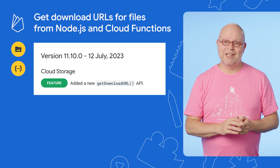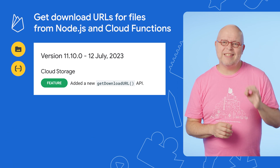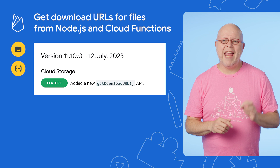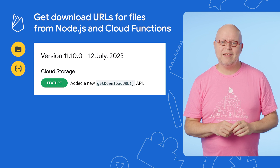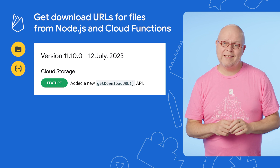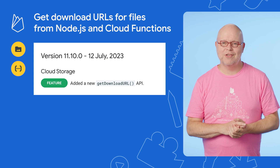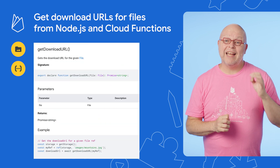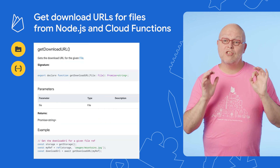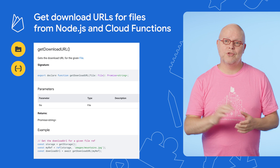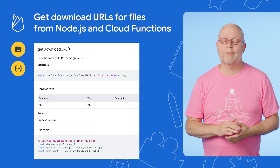Speaking of long-requested features, in version 11.10 of our Admin SDK for Node.js we added a GetDownloadURL method, similar to the one we've always had in our client-side SDK for Cloud Storage. This means you can now get a download URL for files in storage from your server-side code too, including from Cloud Functions, without having to rely on workarounds.